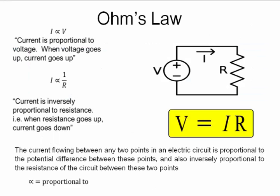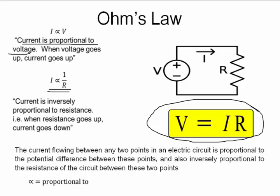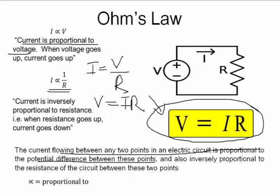So Ohm's law - I guess everyone has heard of Ohm's law. In simple terms, Ohm's law says current is proportional to the voltage and current is inversely proportional to resistance, which gives you I is V over R or cross multiply V is IR. So the current flowing between any two points is proportional to the potential difference between these two points and inversely proportional to the resistance of the circuit between those two points.